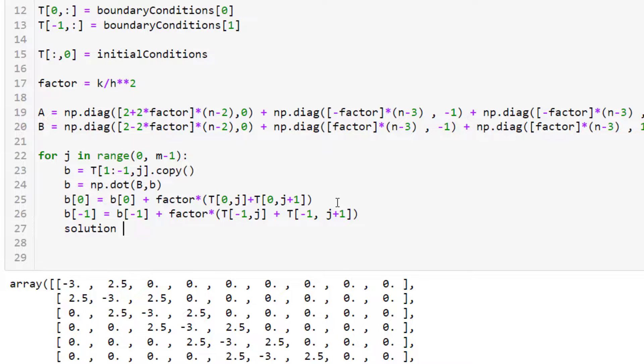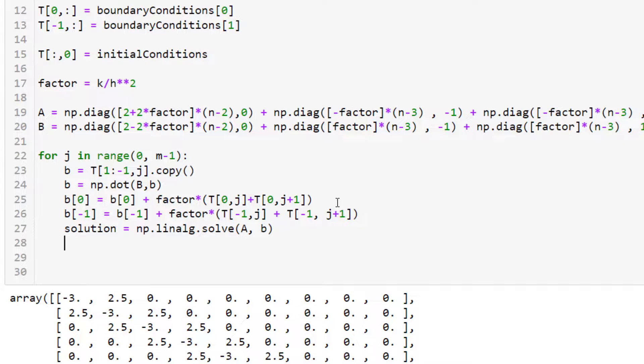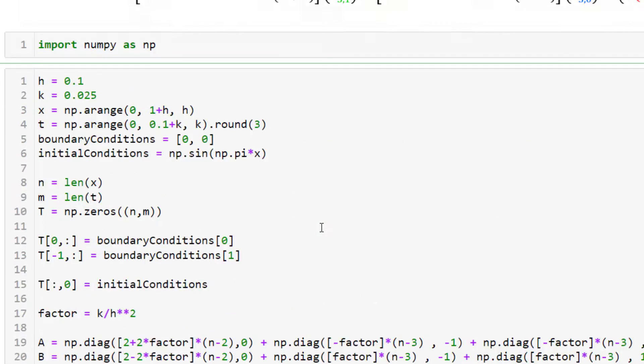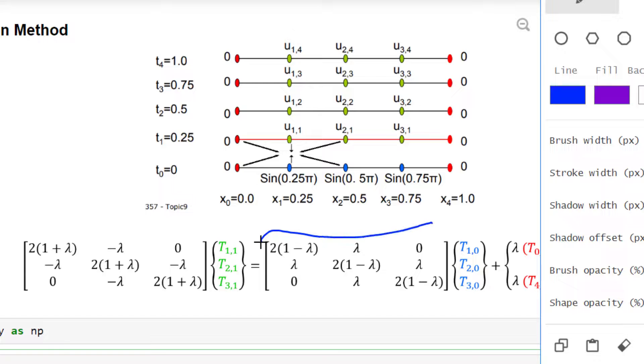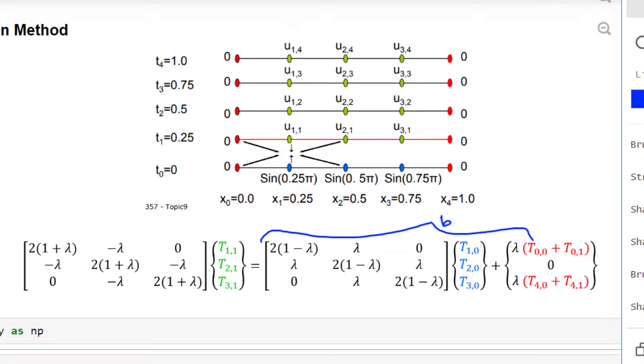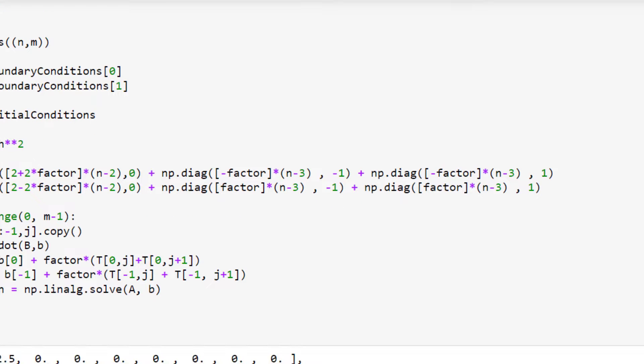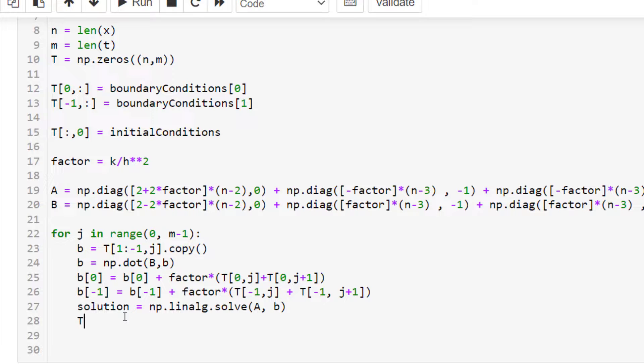And finally your solution is then equal to the same thing we did in the last video linear algebra dot solve A comma B, B being our right hand side vector. And now just to clarify this entire thing is now B. This entire thing is B.